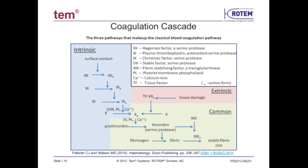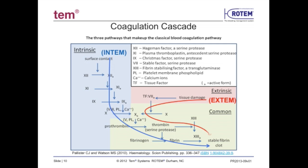The Rotem panel approach starts by looking at pathway-specific deficiencies of the coagulation cascade. The Intem assay evaluates the enzymatic factors of the intrinsic pathway — e.g., factors 12, 11, 9, and 8 — and those continuing through the common pathway — e.g., factors 2, 10, 5, and 13. This pathway will also be sensitive to the anticoagulation effects of heparin.